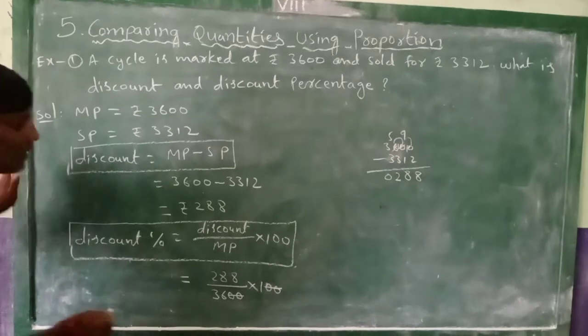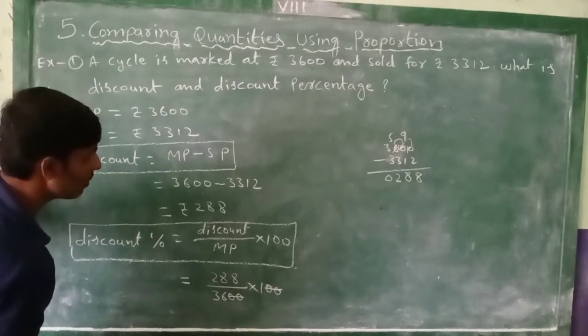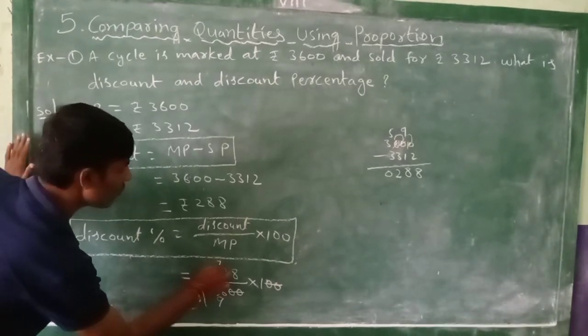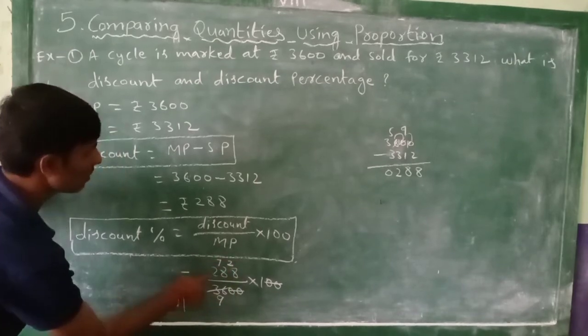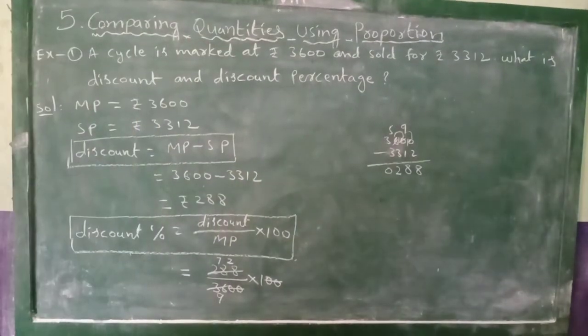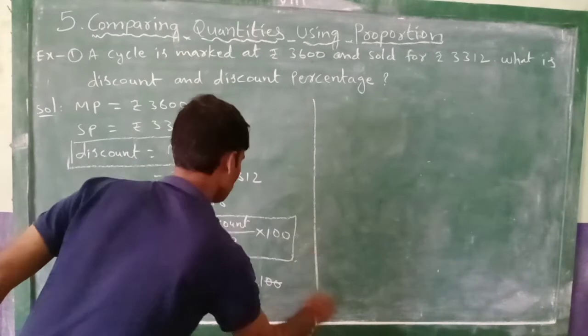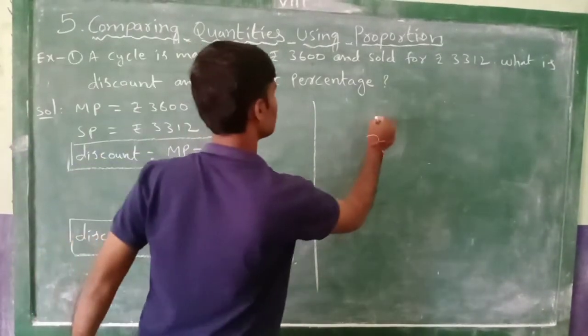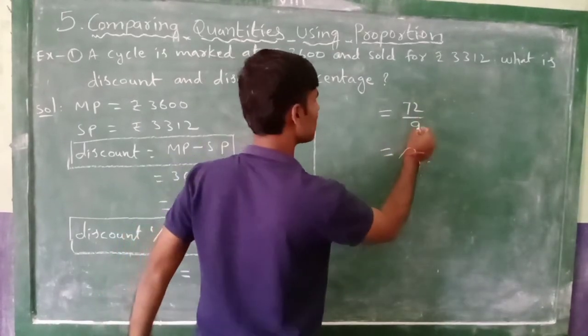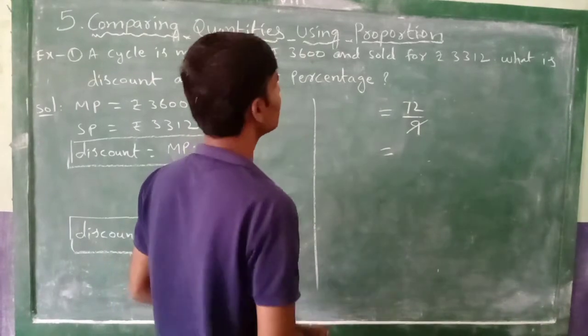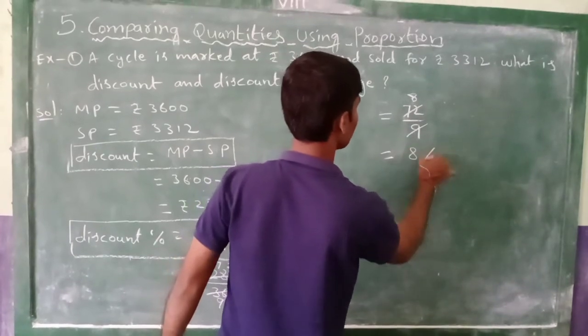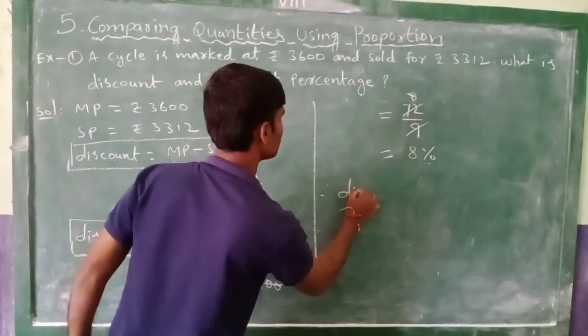We can apply 4 table. 72 divided by 9, again this one also we can cancel. So you got here 8%. Therefore discount percentage equal to 8 percent.